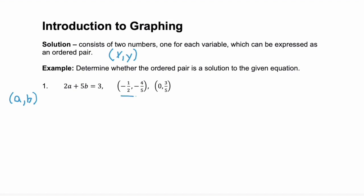So what we're going to do is take this first ordered pair and substitute it in for a and b and see if it's true or not. That would give us two times negative one-half plus five times negative four-fifths. And we're checking if this is equal to three.